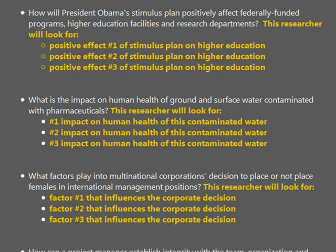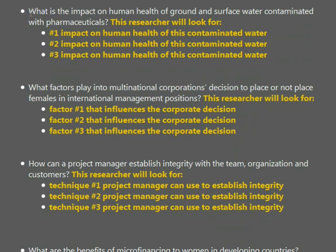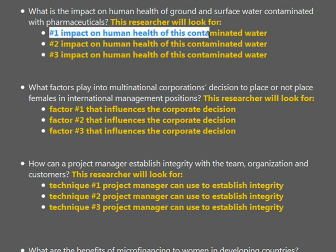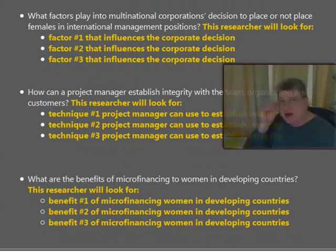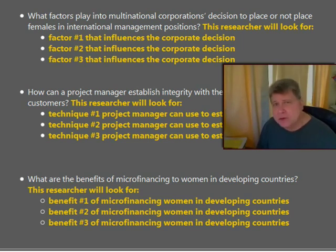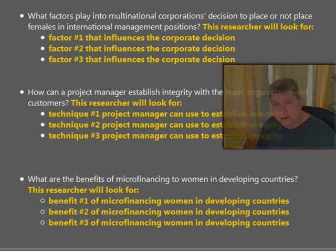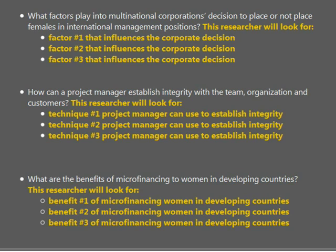You see that same formula being applied in each one of your questions. Here's the next one: What is the impact on human health of ground and surface water contaminated with pharmaceuticals? Clearly, this researcher must look for impact number one on human health of this contaminated water, impact number two, impact number three. So once you've got a good research question, you should be able to clearly determine exactly what you're going to be looking for, and therefore streamline, focus, and laser in on your sources to find the information that helps you answer that question.